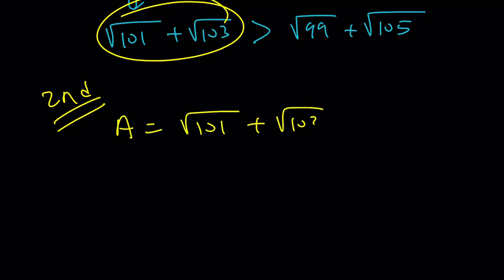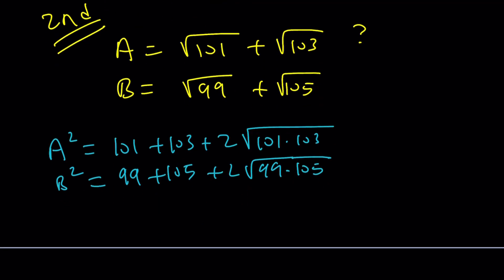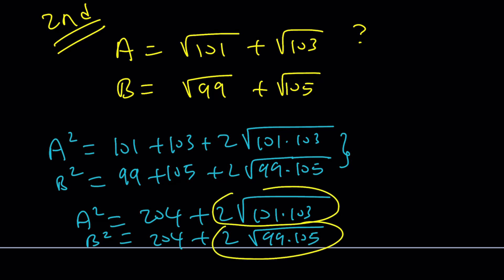I'm going to set these numbers equal to a and b. I'm going to square each number. A squared is going to be 101 plus 103 plus 2√(101×103). And b squared is 99 plus 105 plus 2√(99×105). A squared can be now written as 204 plus 2√(101×103), and b squared is 204 plus 2√(99×105). Notice that they have the same piece, but then there's a different piece.